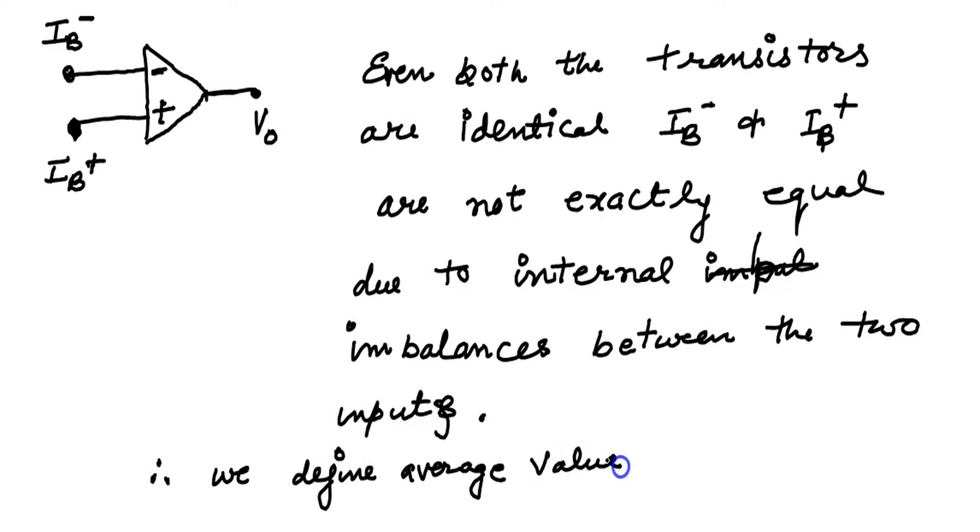We define the average value of the bias current. IB is equal to IB plus plus IB minus divided by 2. This is the average value.